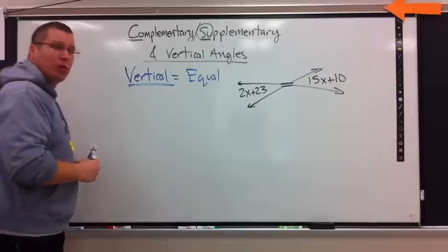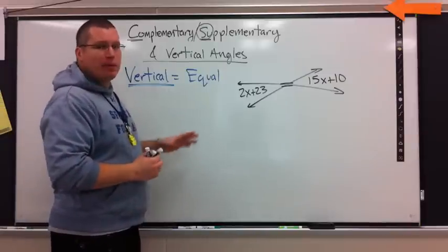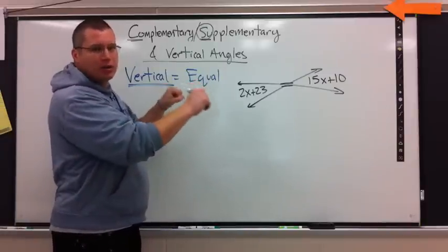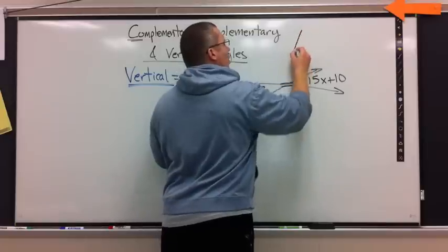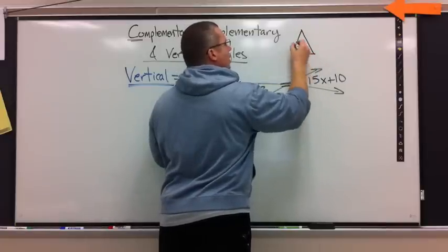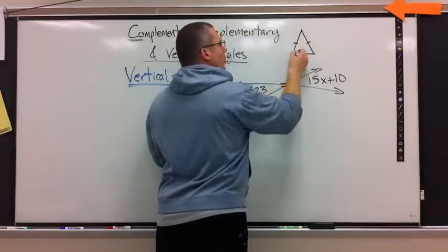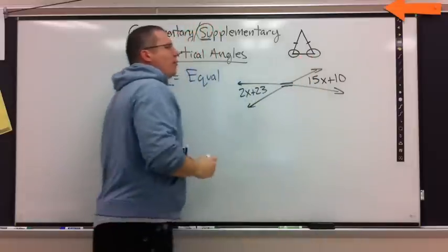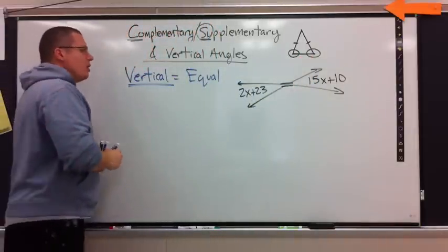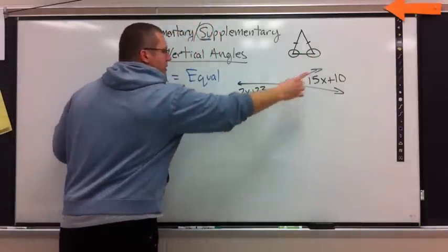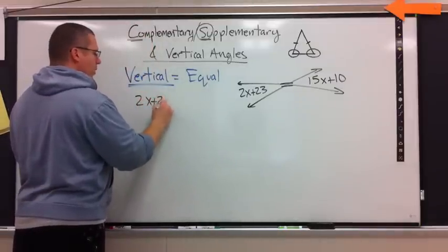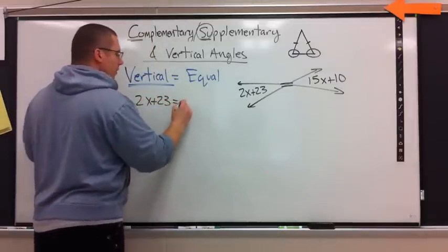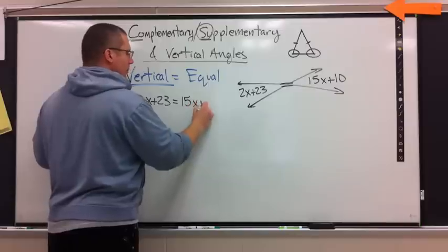Which, by the way, when you think about triangles, which type of triangle set two angles equal to each other? Do you remember? Remember, it looked like this. Where the two opposite angles were equal. That's right. It's isosceles. Okay. So, this is equal to that. Let's write it. 2X plus 23 equals 15X plus 10.